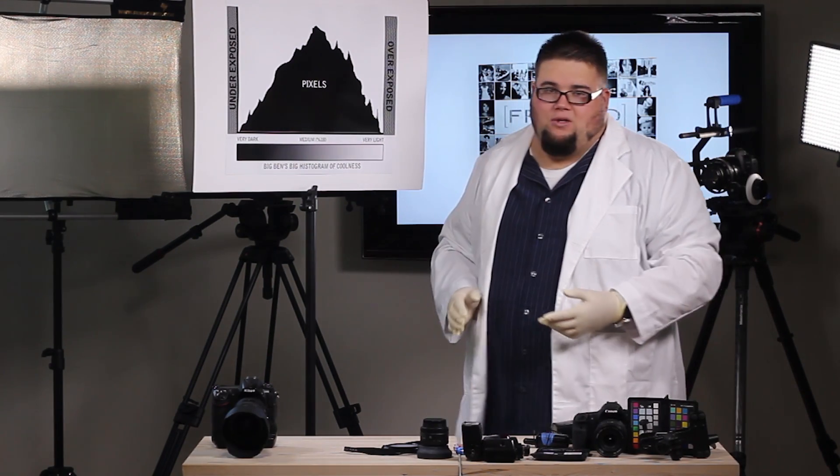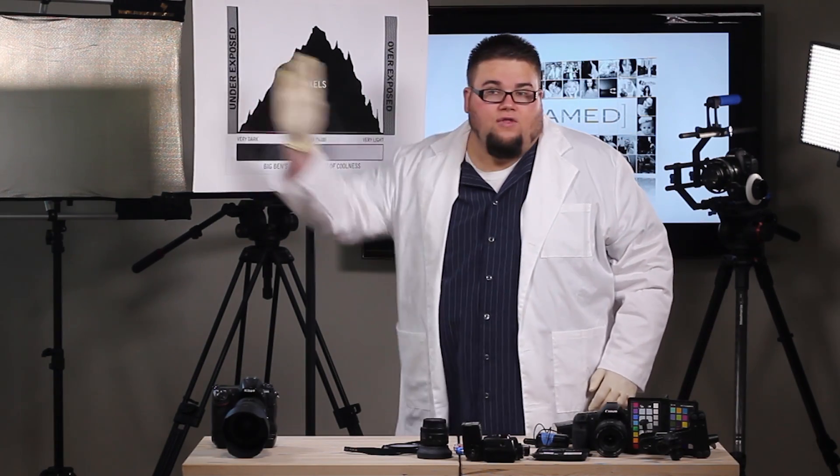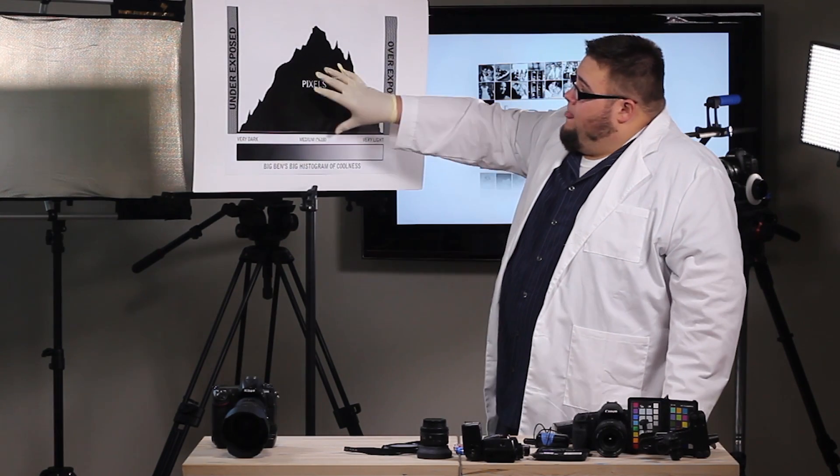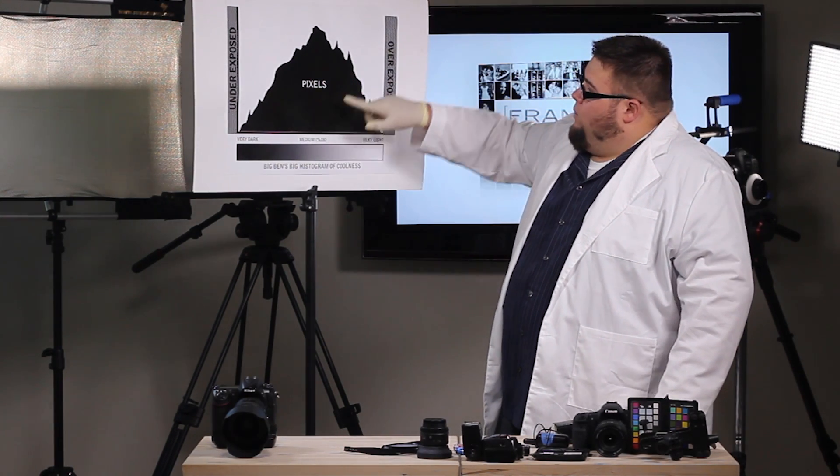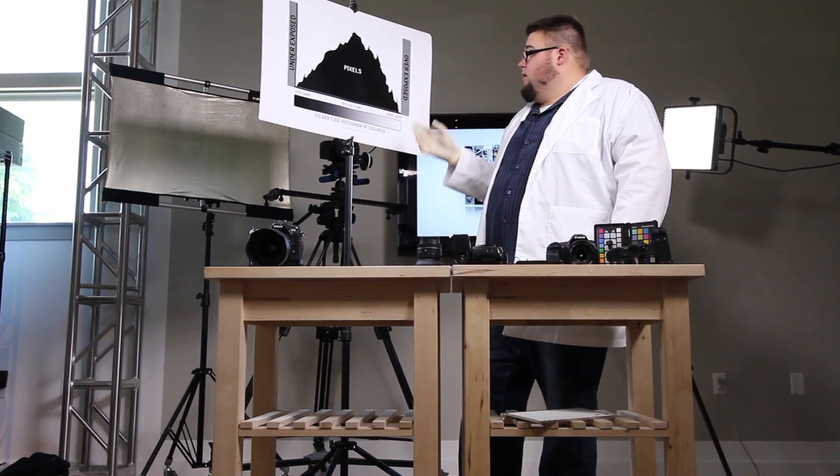If we were to underexpose our image, all these pixels would go over off the graph onto the underexposed side. If we were to overexpose our image, you're going to see a shape of a graph to where there's a lot of pixels toward the other side, or the light side.